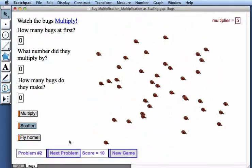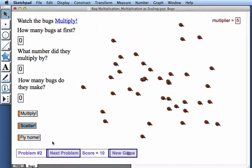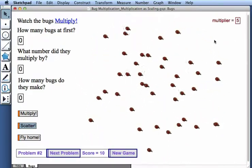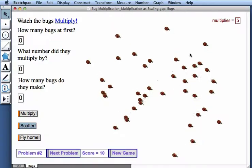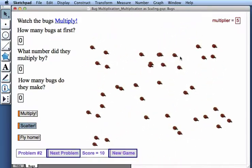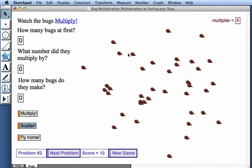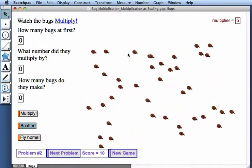Now when I'm done with this game, which consists of 10 problems, I can move on to a new game. And for the first game, all of our multipliers were 5. Each bug split into 5 bugs, and we saw every multiplication fact from 1 times 5 all the way up to 10 times 5.